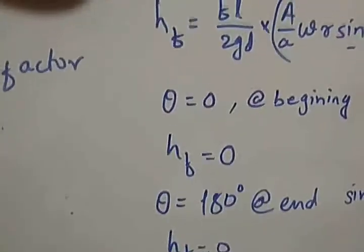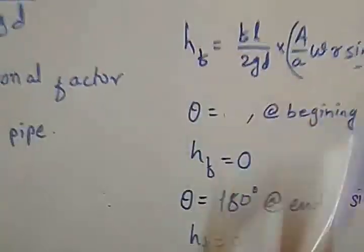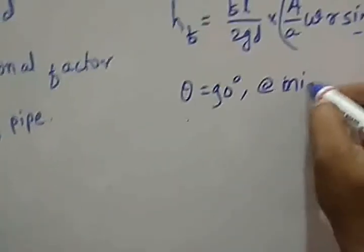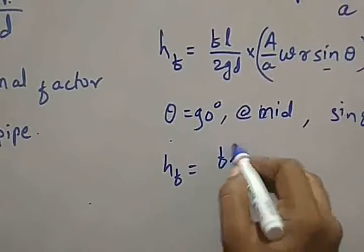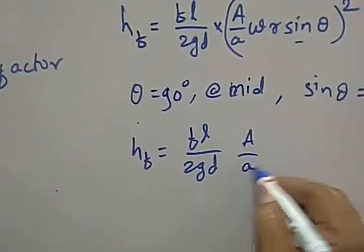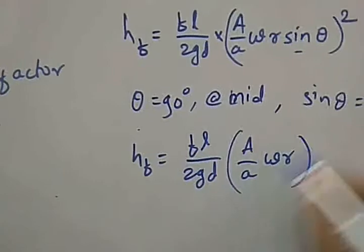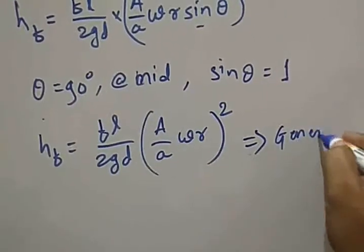Now, at the mid — that is θ equal to 90 degrees — sinθ is equal to 1, because sin 90 is equal to 1. So the head of friction is given by FL divided by 2GD into [(A/a)ωR]². This is the generalized equation.